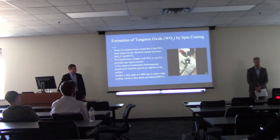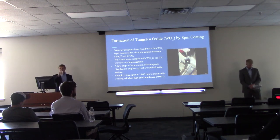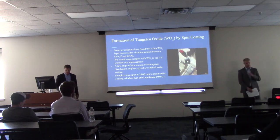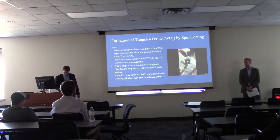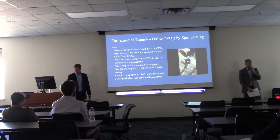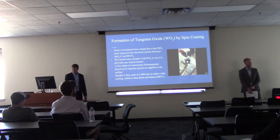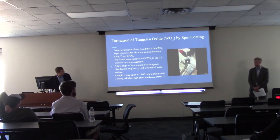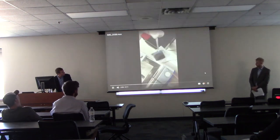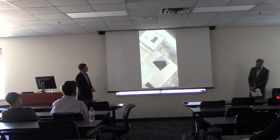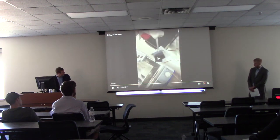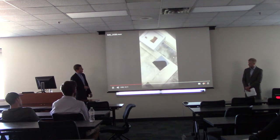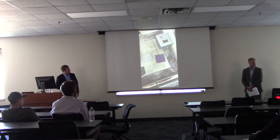The tungsten oxide is formed by spin coating — some researchers believe it improves the electrical characteristics of the solar cell. About half of our artificial leaves have tungsten oxide, and half don't. A few drops of ammonium metatungstate dissolved in ethylene glycol are applied to the surface, then spun at about 2,000 RPM for about one minute. After it's evenly spread, we bake it on a hot plate at about 400°C to form the tungsten oxide layer. In the video, you can see it change from a silver to a rainbow-y color.